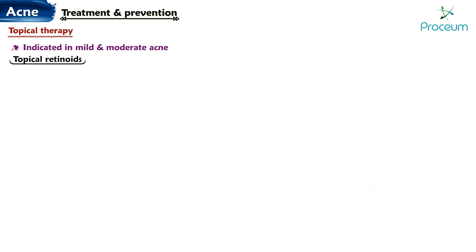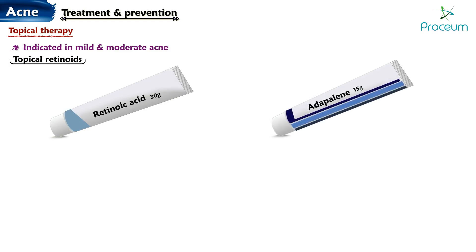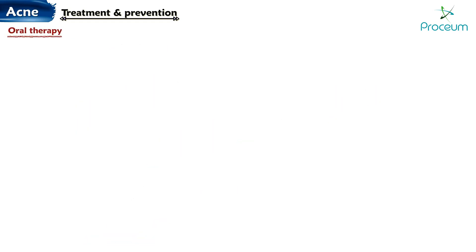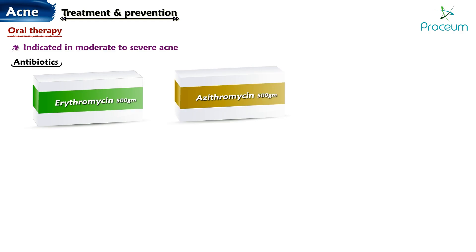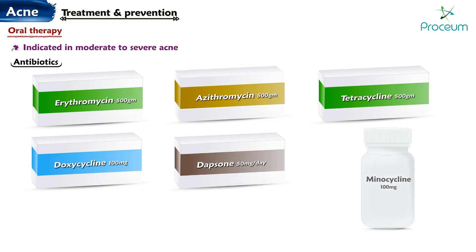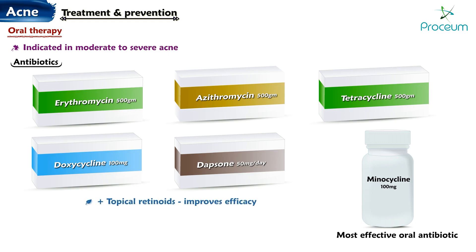Topical retinoids include retinoic acid, adapalene, and tazarotene. Retinoids decrease the abnormal keratinization from the pilosebaceous units, thus unplugging the follicle. Topical retinoids are used for maintenance therapy. Oral therapy is indicated in moderate to severe acne. Oral antibiotics include erythromycin, azithromycin, tetracycline, doxycycline, dapsone, and minocycline. Minocycline is the most effective oral antibiotic. Combination with topical retinoids improves efficacy; benzoyl peroxide decreases resistance. Treatment duration is 4 to 6 months.